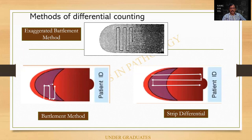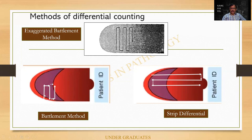This is called the battlement method. Please remember the battlefield — this is the battlement method. When I exaggerate the same thing, I go almost to the other end of the smear, turn, and come back — this is called the exaggerated battlement method. The third one is counting longitudinally, parallel to the long axis of the smear — this is called a strip differential. The battlement method is most commonly followed. Do not answer 'zigzag method' in the exam — that is colloquial. You should be able to explain the battlement method.